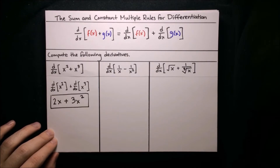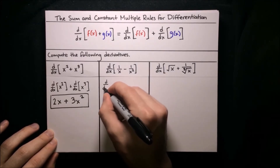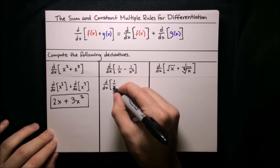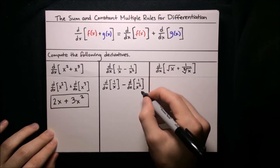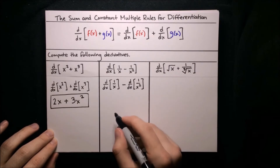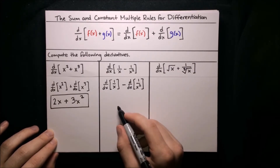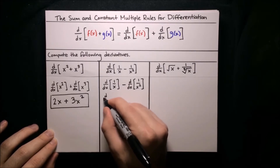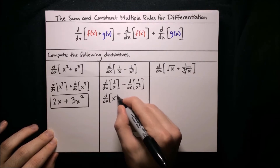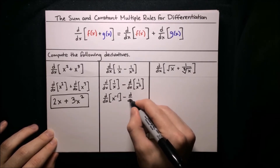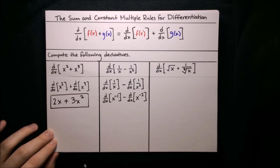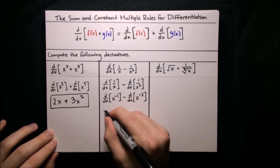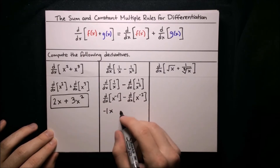In the next example, we have 1 over x minus 1 over x squared. The sum rule also works with subtraction, so we can split up this derivative into the derivative of the first term, 1 over x, minus the derivative of the second term, 1 over x squared. We want to get these into a form where we can apply the power rule, so let's write them as powers of x: 1 over x is x to the negative 1, and 1 over x squared is x to the negative 2. Applying the power rule to x to the negative 1, we bring down the exponent — negative 1 times x — and decrease that exponent by 1, so it goes to negative 2.